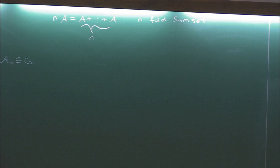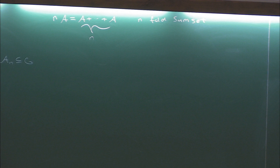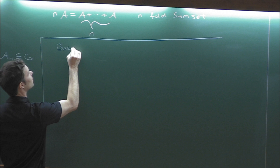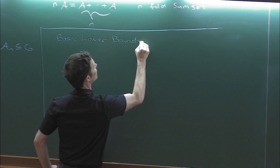We're not actually multiplying every element of the set A by n. When we write nA, we're looking at the n-fold sumset, where we're adding A to itself n times. This lecture is going to start off with some basic lower bounds, and then I want to talk about a very fundamental result called Kneser's theorem.